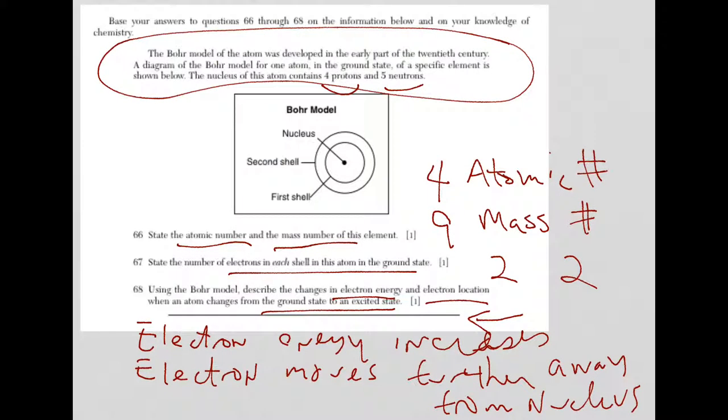For the answers to 68, you could have said the electron energy increases, electron has more energy, or electron absorbs energy. For electron location, answers that would be acceptable include moving further away from the nucleus, going from the first shell or energy level into the second shell or energy level. Any one of those combinations would work.